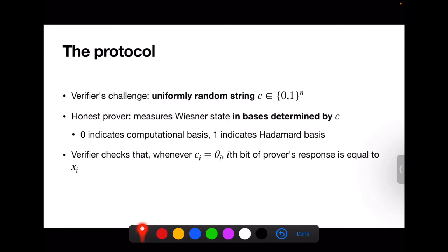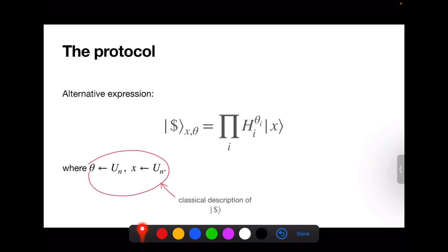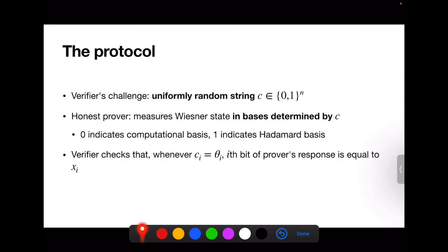Here's a protocol that might be a proof of quantum knowledge for a Wiesner money state. The verifier issues a uniformly random n-bit challenge C to the prover. The honest prover measures the Wiesner state in the basis determined by C: if the i-th bit of C is 0, it measures in the computational basis; otherwise in the Hadamard basis. The verifier checks that whenever the i-th bit of C equals the i-th bit of θ, the i-th bit of the prover's response equals x_i.